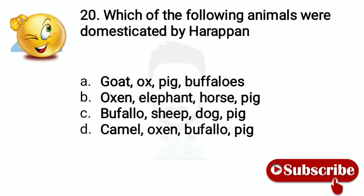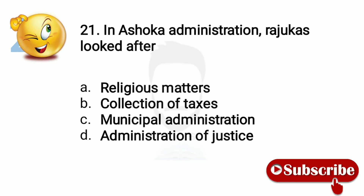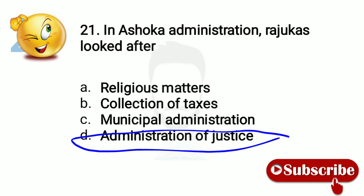Question 19: Which of the following animals were domesticated by Harappans? Buffalo, sheep, dog, and pig. Question 20: In Ashoka's administration, Rashtrakutas looked after — administration of justice.